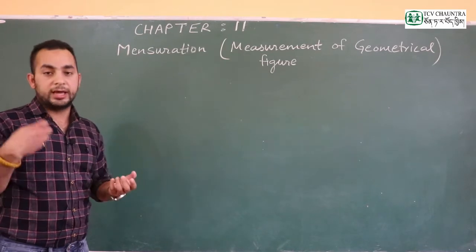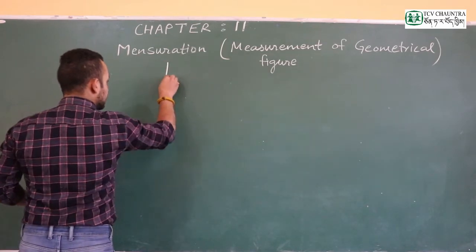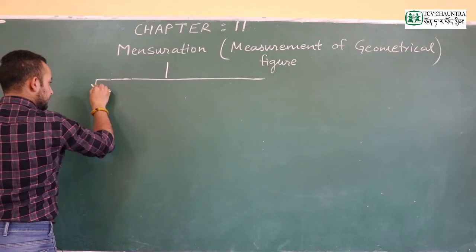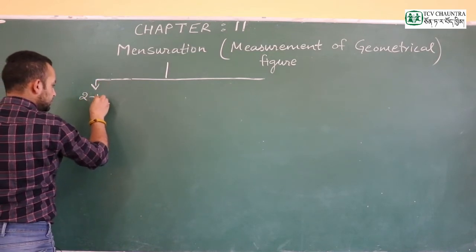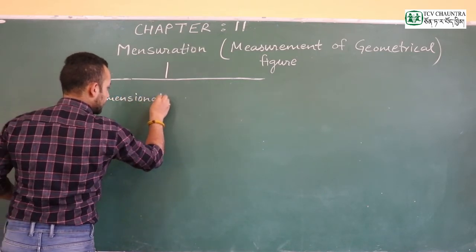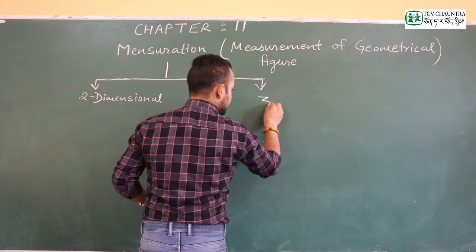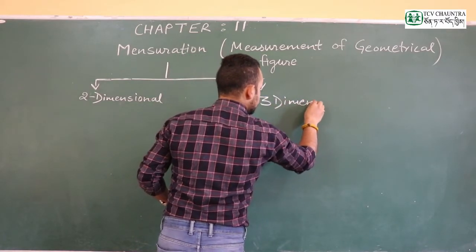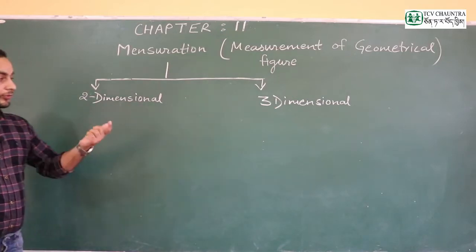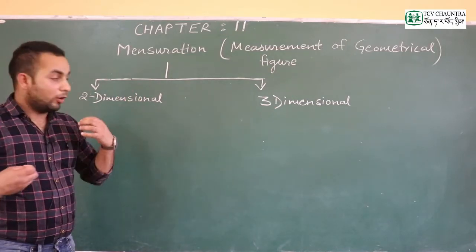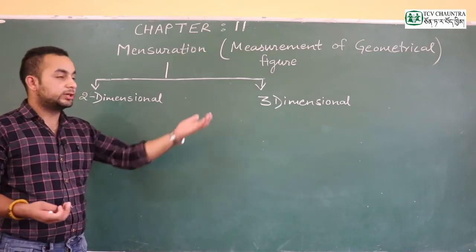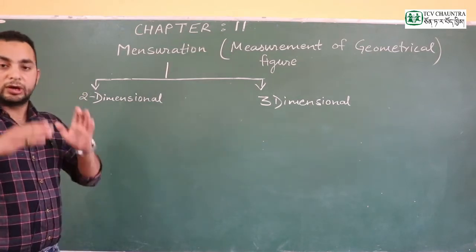In mensuration, we have two-dimensional figures as well as three-dimensional figures. So in mensuration we have two-dimensional figures, which means 2D, and on the other side we have three-dimensional figures. We already discussed two-dimensional figures in Class 7, and in Class 8 we are going to learn the three-dimensional figures.